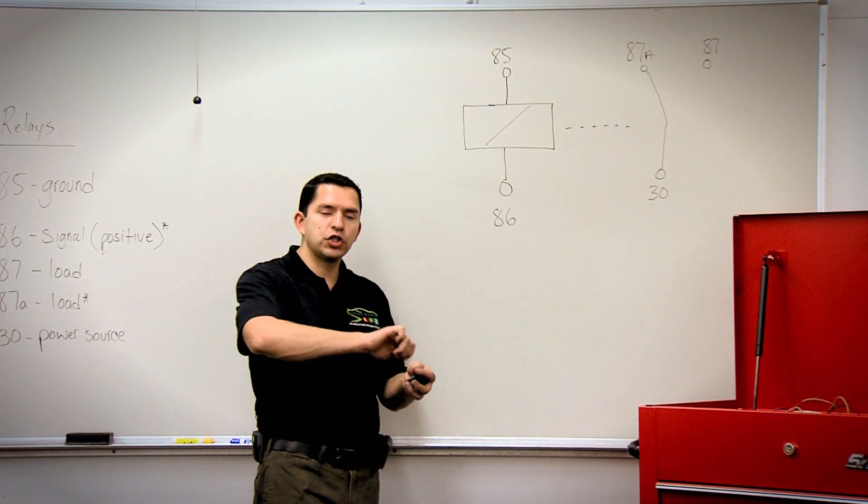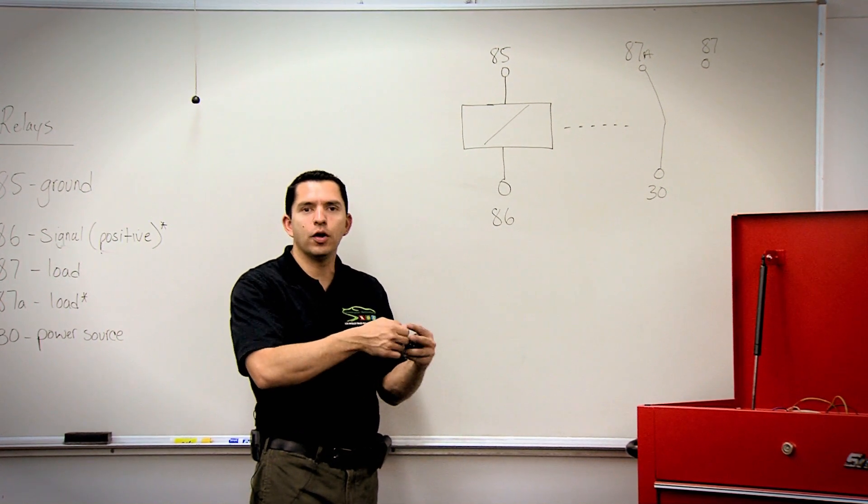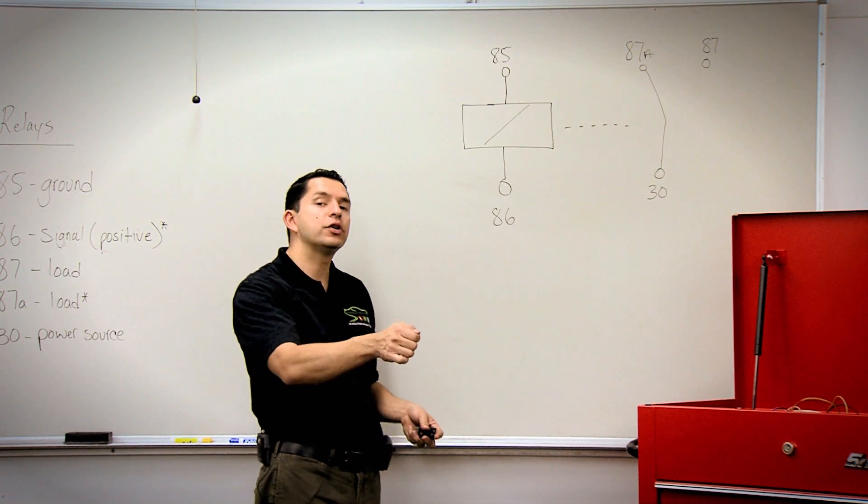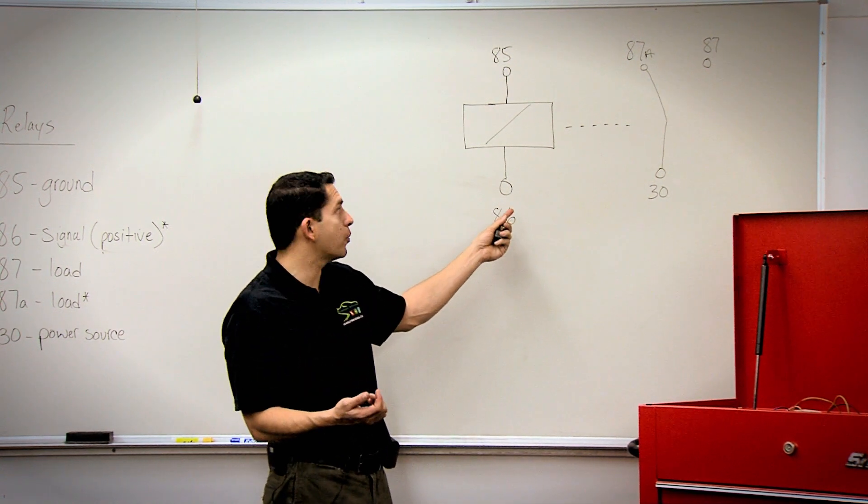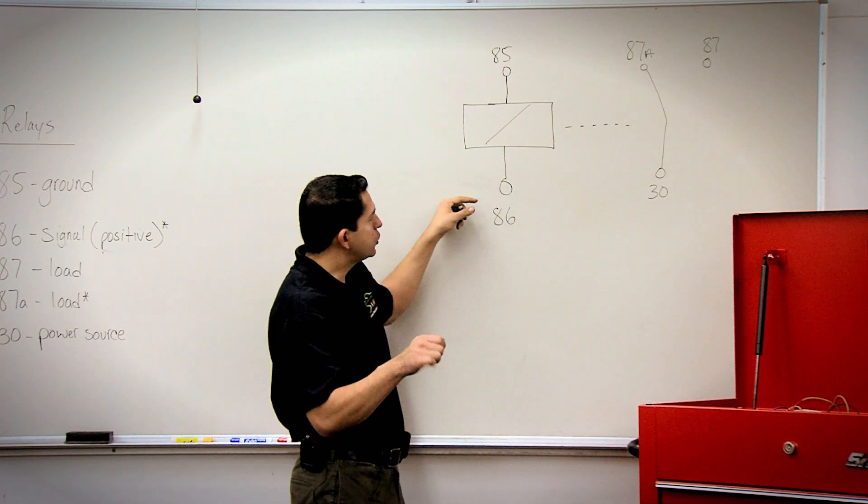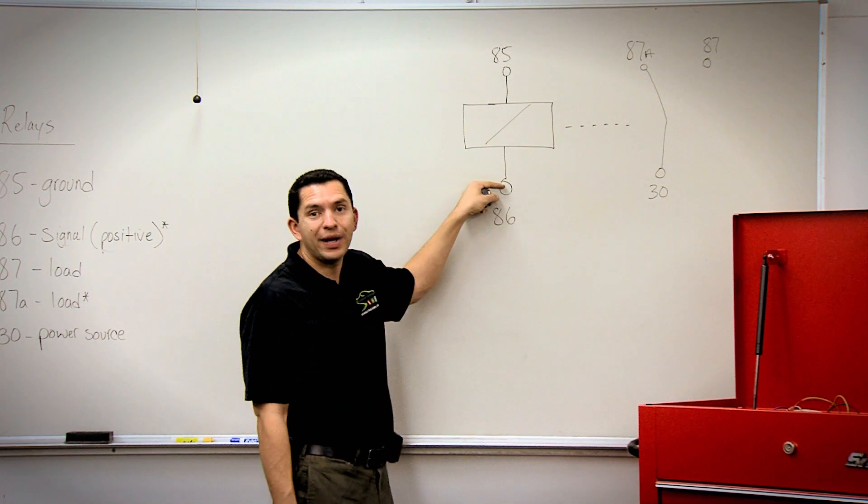On our key switch we typically have low amperage. When we turn the switch, if this relay is powering up our starter motor, we send power to 86.